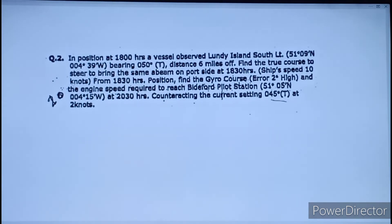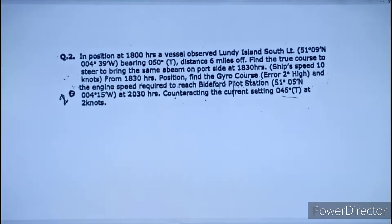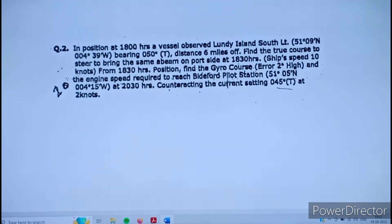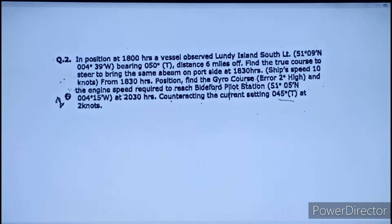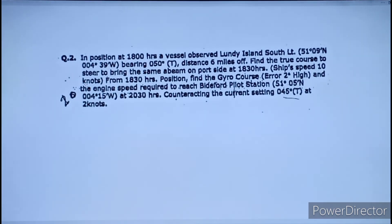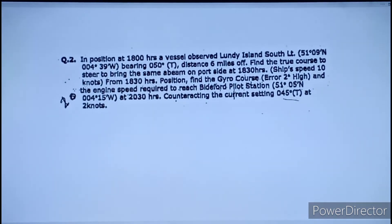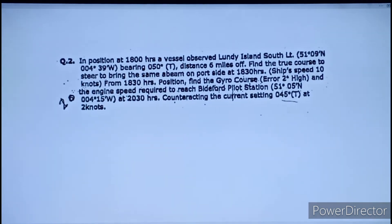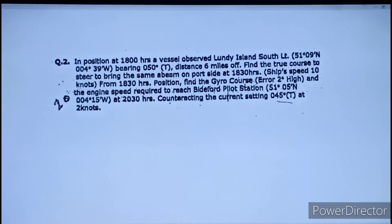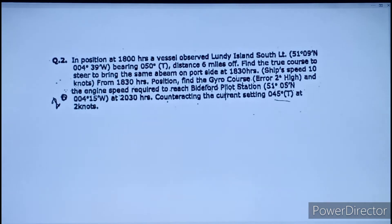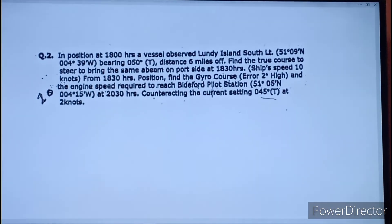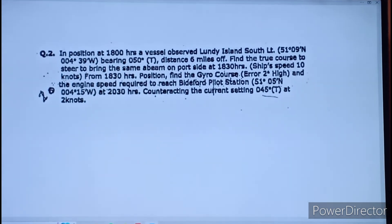Question 2: at 1800 hours, a vessel observed Lundy Island South Light bearing 050°, distance 6 miles off. Find the course to steer to bring the same light abeam on the port side at 1830 hours, ship speed 10 knots from 1830 hours. Then find the gyro course — error 2 degrees high — and engine speed required to reach the pilot station, counteracting a current setting 045° true at 2 knots. This is an interesting question because we do not have the CTS directly.